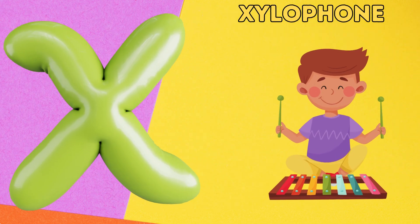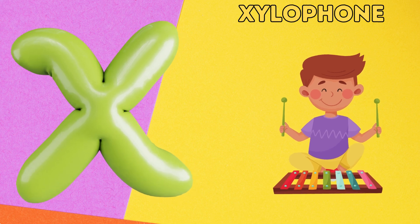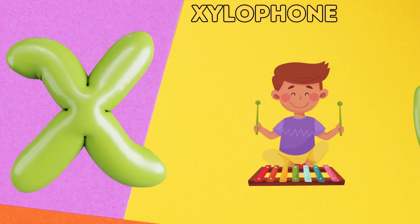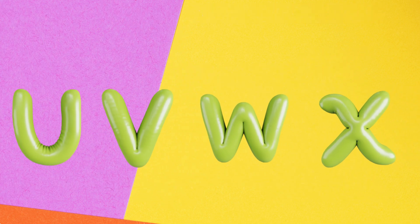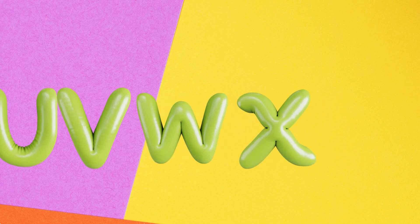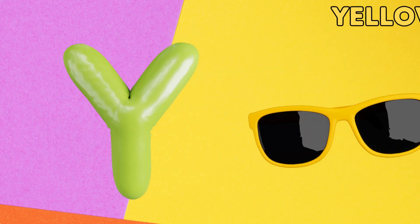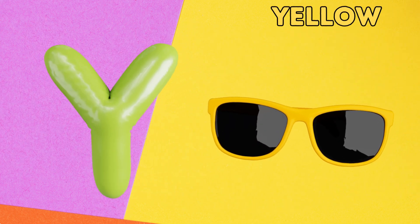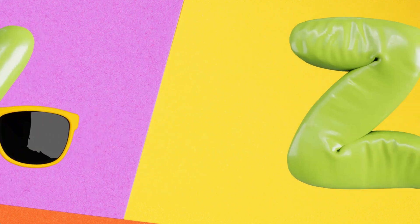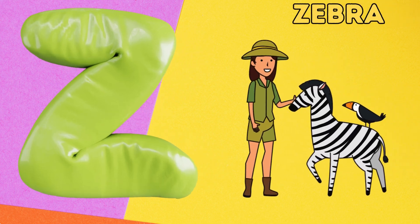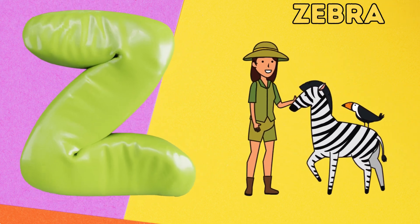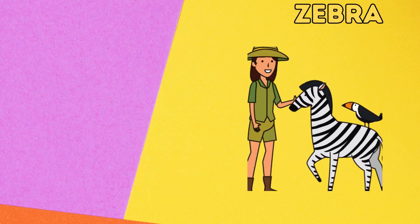X is for xylophone, z-z-xylophone. Y is for yellow, y-y-yellow. Z is for zebra, z-z-zebra.